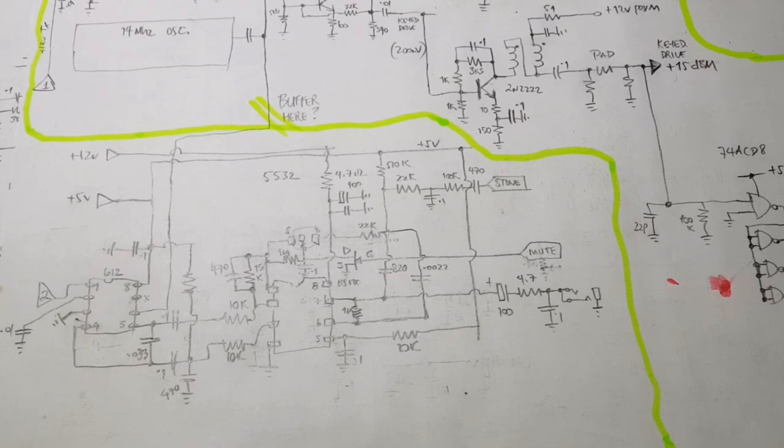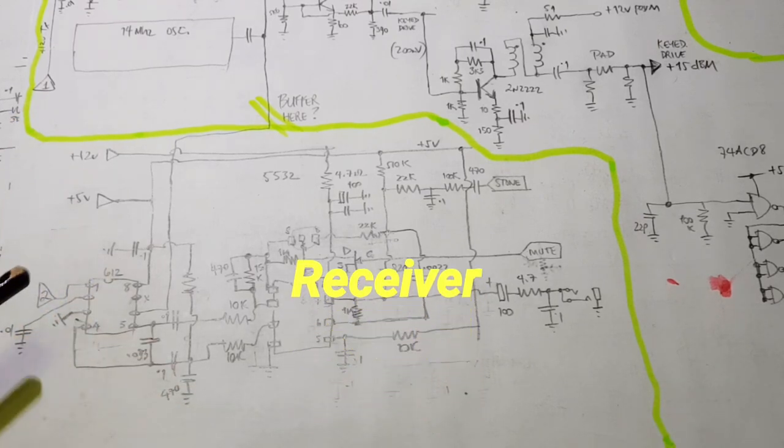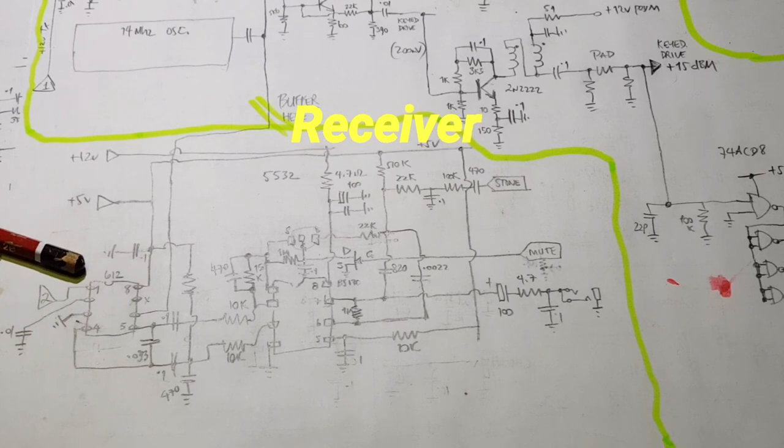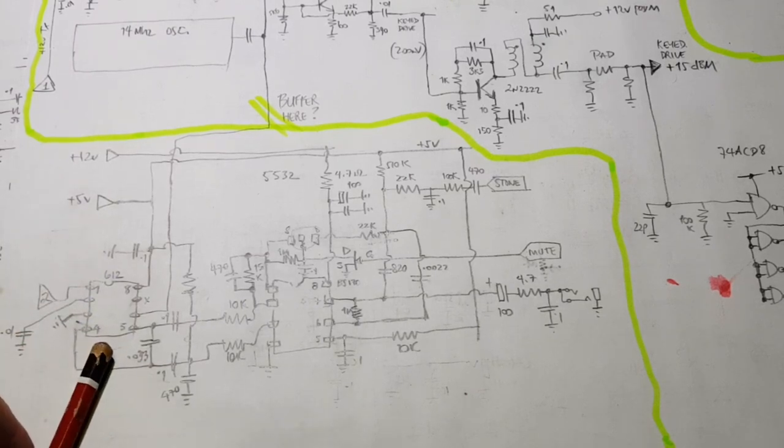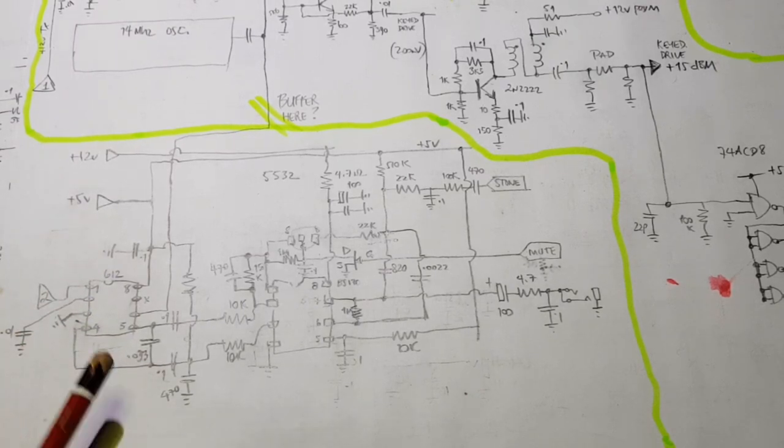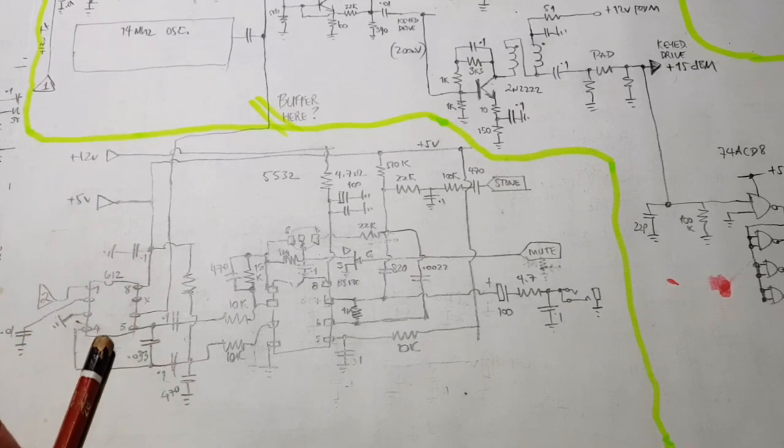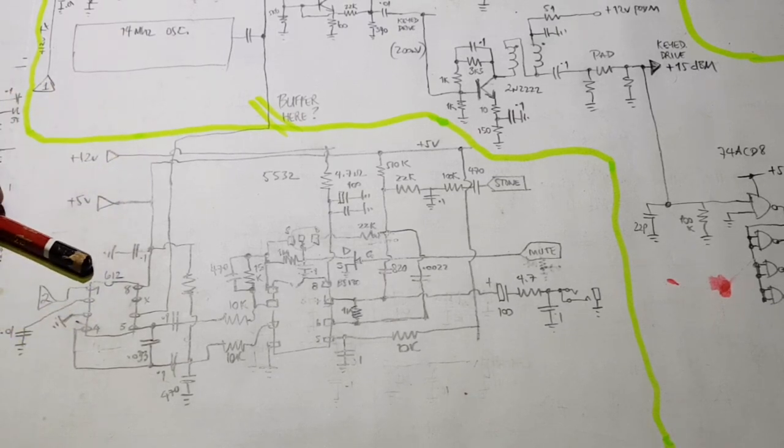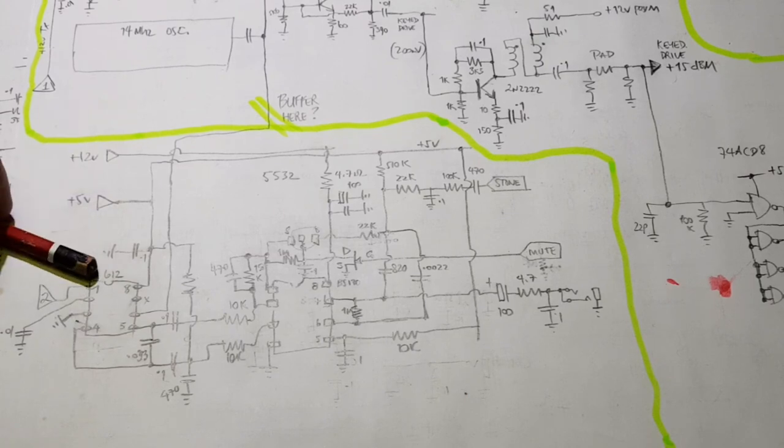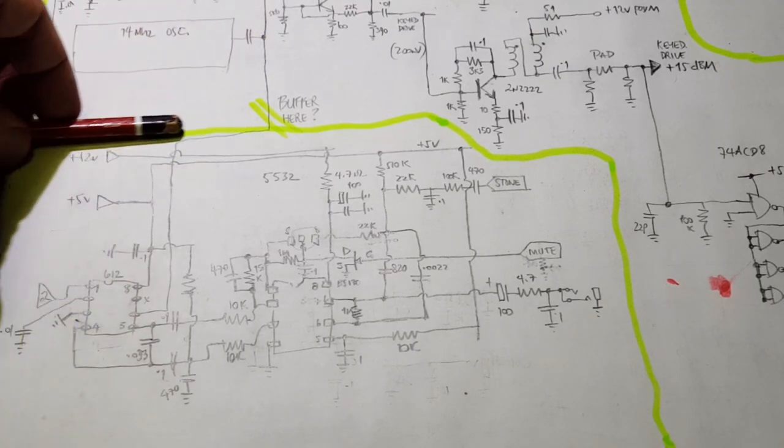So the only thing left now is the receiver. So the options here are to use a diode ring mixer, an SBL1 or JMS1, ADE1, or use an SA612 Gilbert cell. A lot of these simple designs use 612s, and I see no reason not to do that. A diode ring mixer would give better dynamic range and possibly be lower in noise. And the penalty for using a diode ring mixer is that you have to drive its local oscillator port quite hard, so I would need to install another buffer.